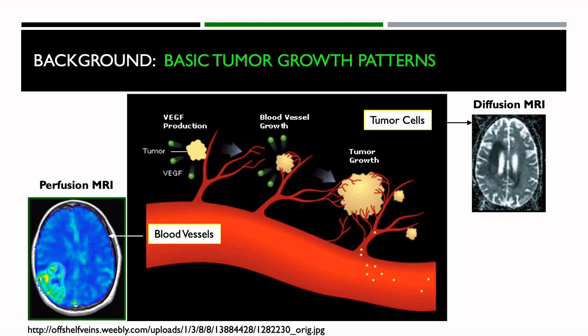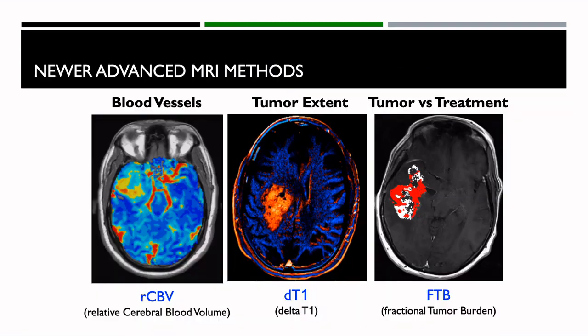I'm going to talk about these methods in the context of the treatment paradigm. Specifically, I'm going to talk about blood vessel mapping, which we refer to as relative cerebral blood volume (RCBV). I'll also discuss a method we've developed to better delineate the extent of tumor, which we refer to as our delta T1 map. Taking these two types of images together, we can create something called a fractional tumor burden map, which gives us a measure of tumor versus treatment.